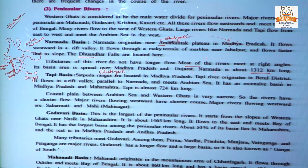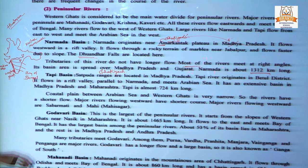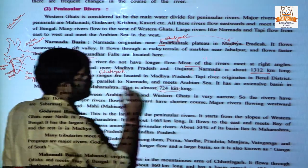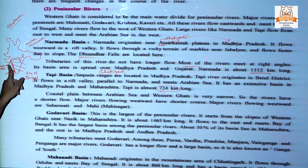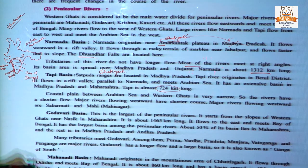Tapi has an extensive basin in Madhya Pradesh and Maharashtra. Gujarat receives a low amount of benefit from Tapi because most of the river flows through Madhya Pradesh and Maharashtra. Tapi is only about 724 kilometers long. The coastal plain between the Arabian Sea and the Western Ghats is very narrow. Major rivers flowing westward have a shorter course — these are Sabarmati and Mahi.